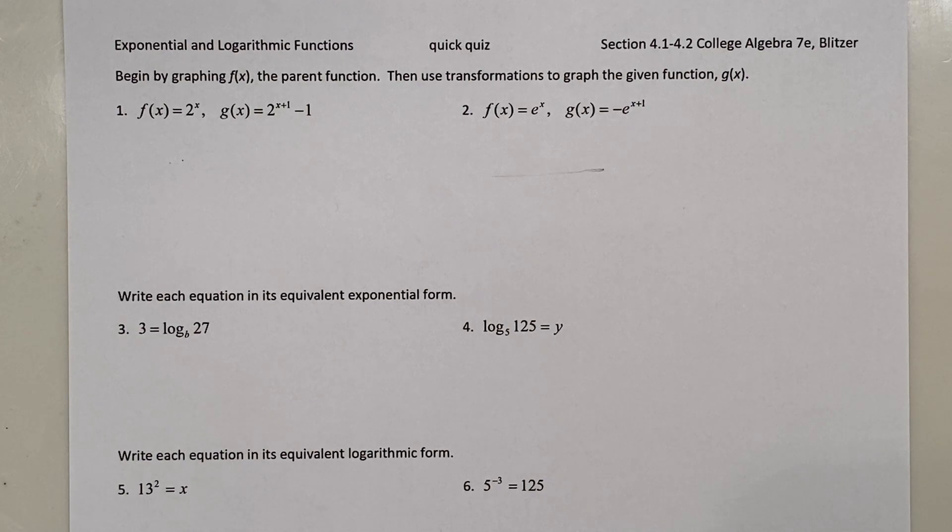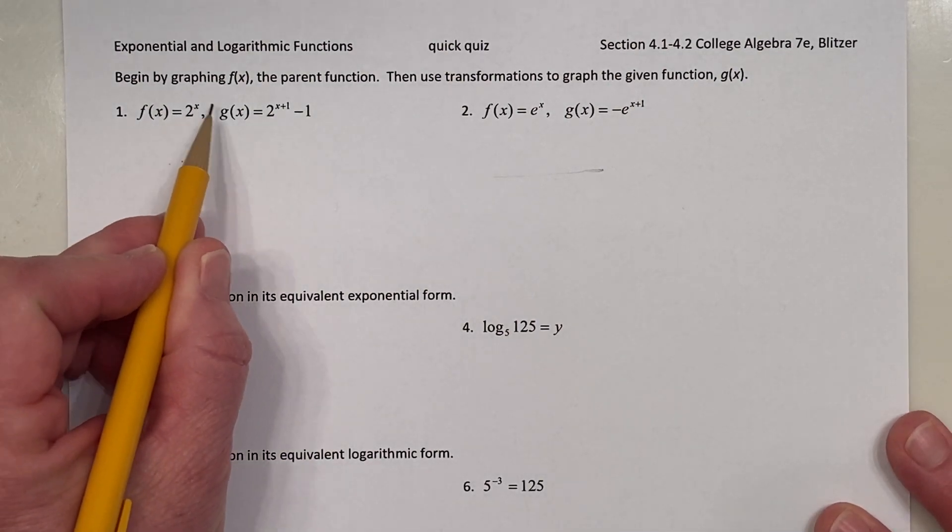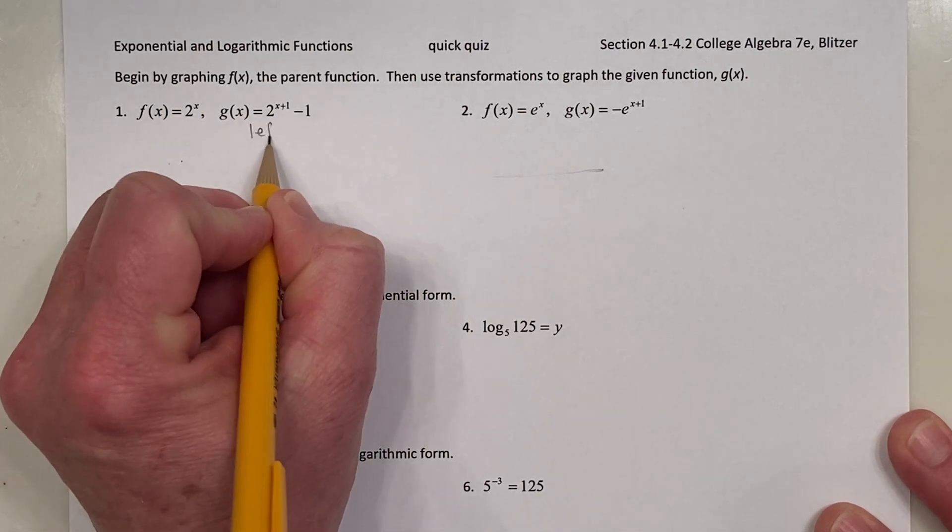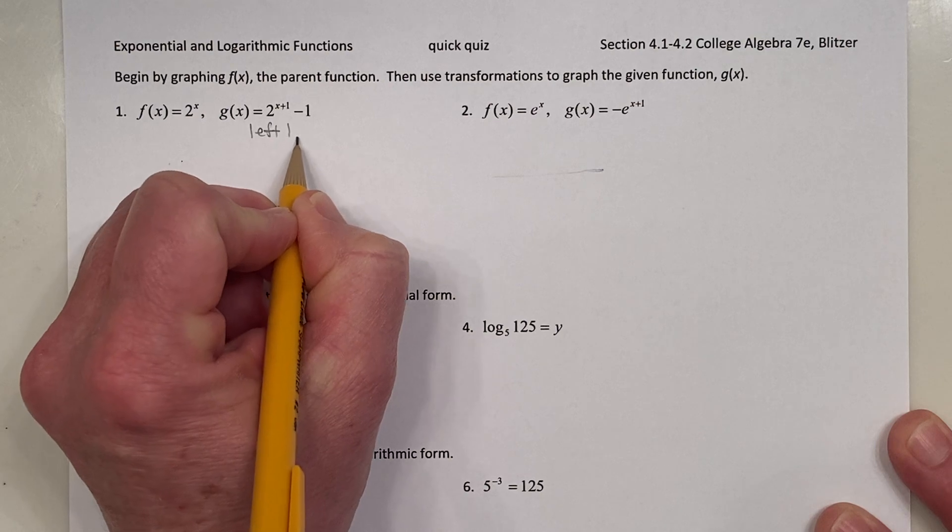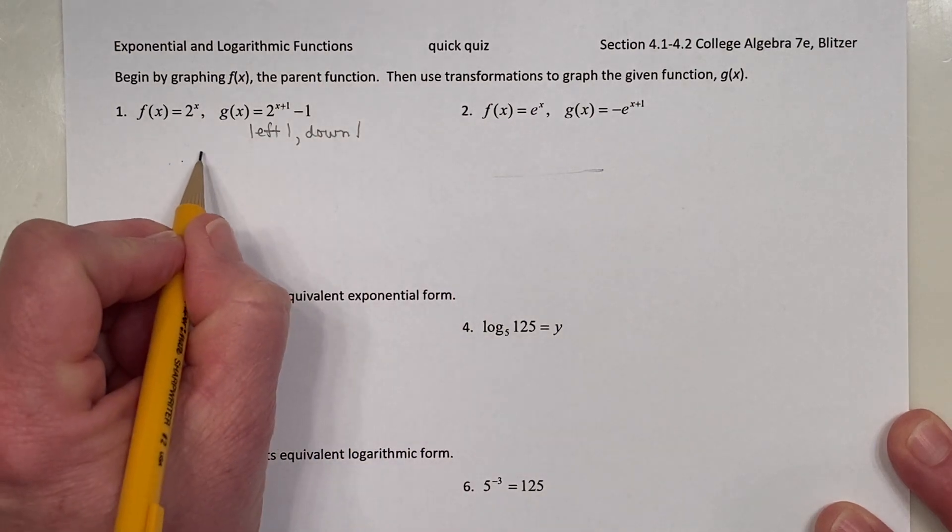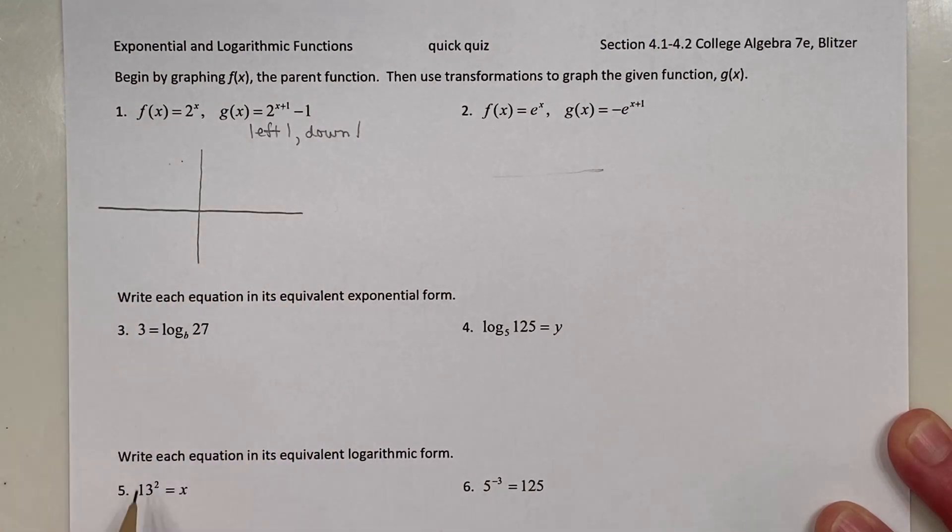Problems 1 and 2 have us graphing a parent function and then using transformations to graph the given function. So in problem 1, we're given the parent function of the exponential 2 to the x, and then we're asked to graph g of x, which is a shift left 1 and then down 1.